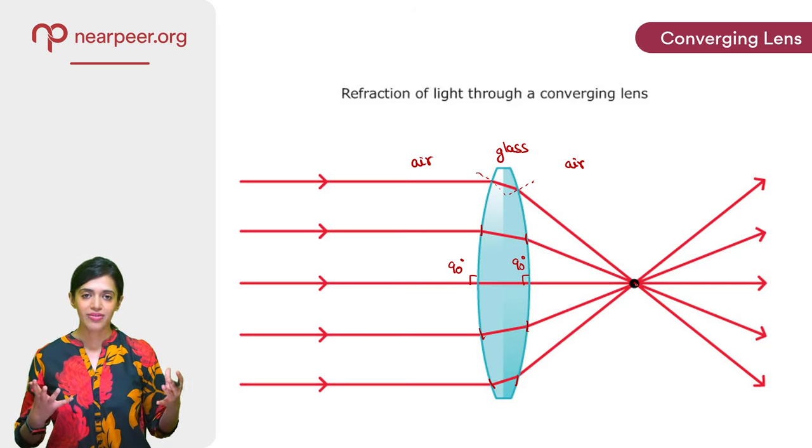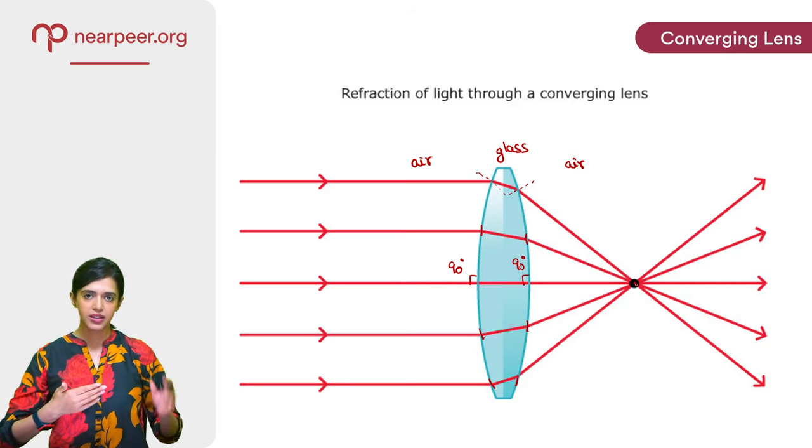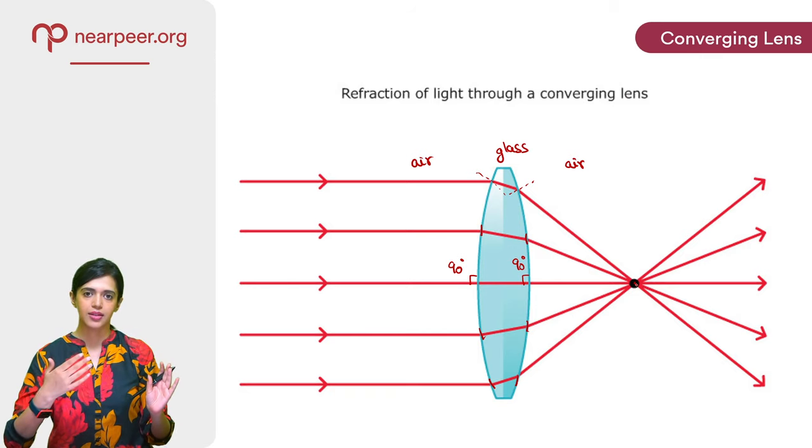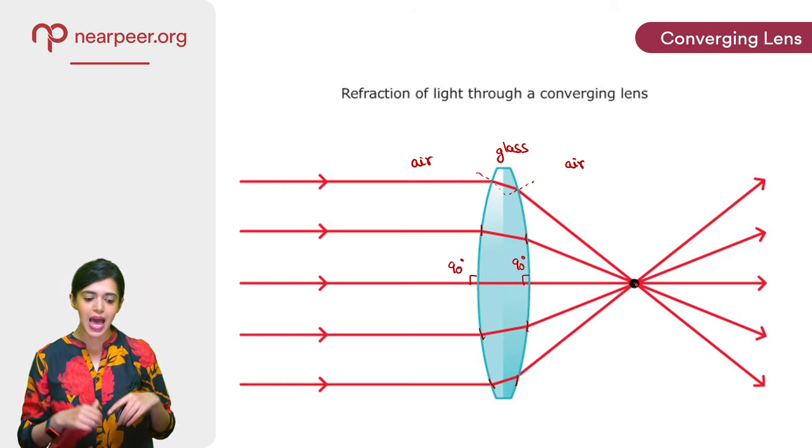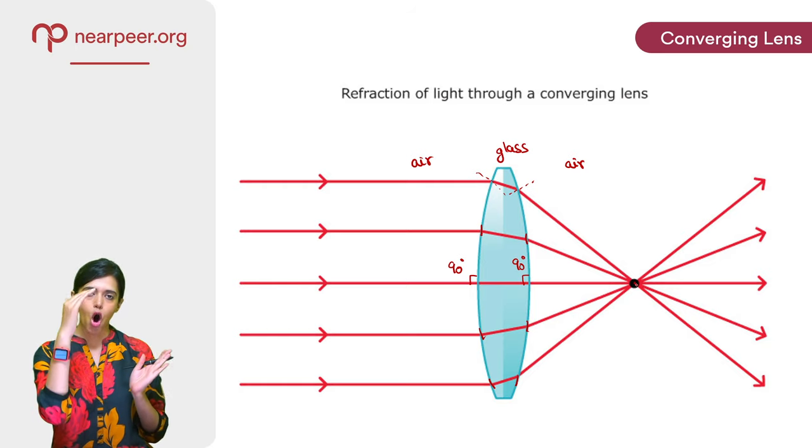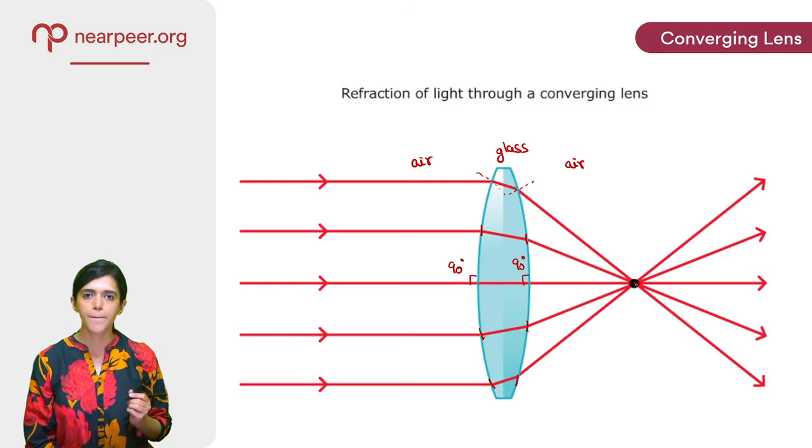So you saw that all these parallel rays of light, they were incident onto the convex lens, the converging lens. Convex lens is just another name for a converging lens. And as a result, they all converged to a point.